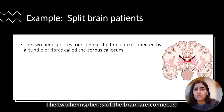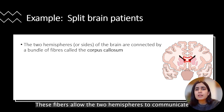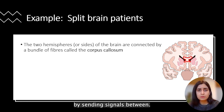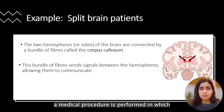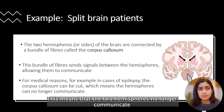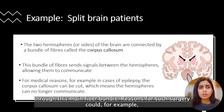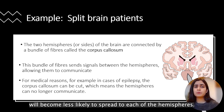The two hemispheres of the brain are connected anatomically by a large bundle of fibers called the corpus callosum. These fibers allow the two hemispheres to communicate by sending signals between them. In some people, a medical procedure is performed in which the corpus callosum fibers are transected, meaning the two hemispheres no longer communicate through this main fiber bundle. One reason for such surgery could be epilepsy, as an epileptic attack would then become less likely to spread to each hemisphere.